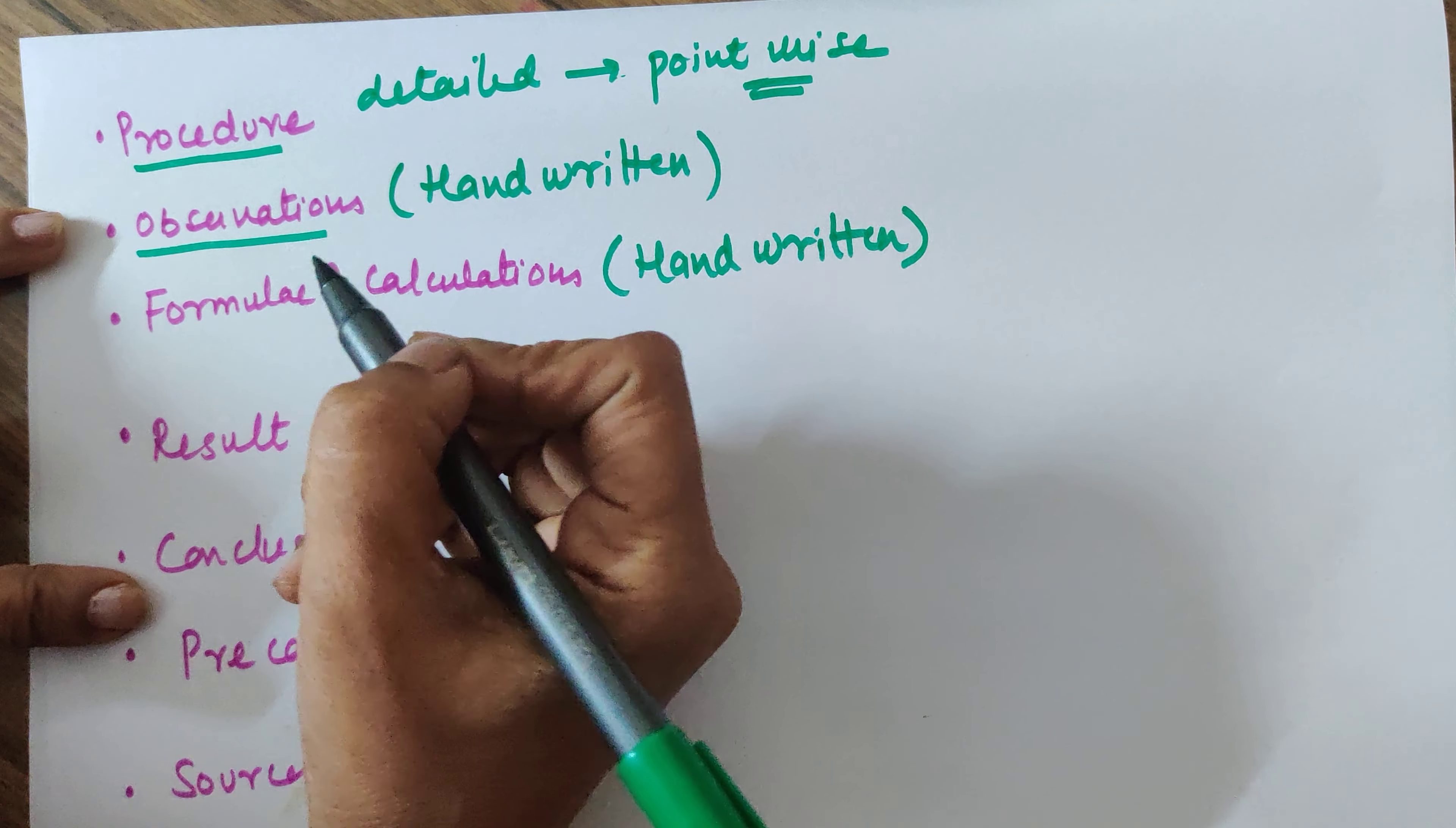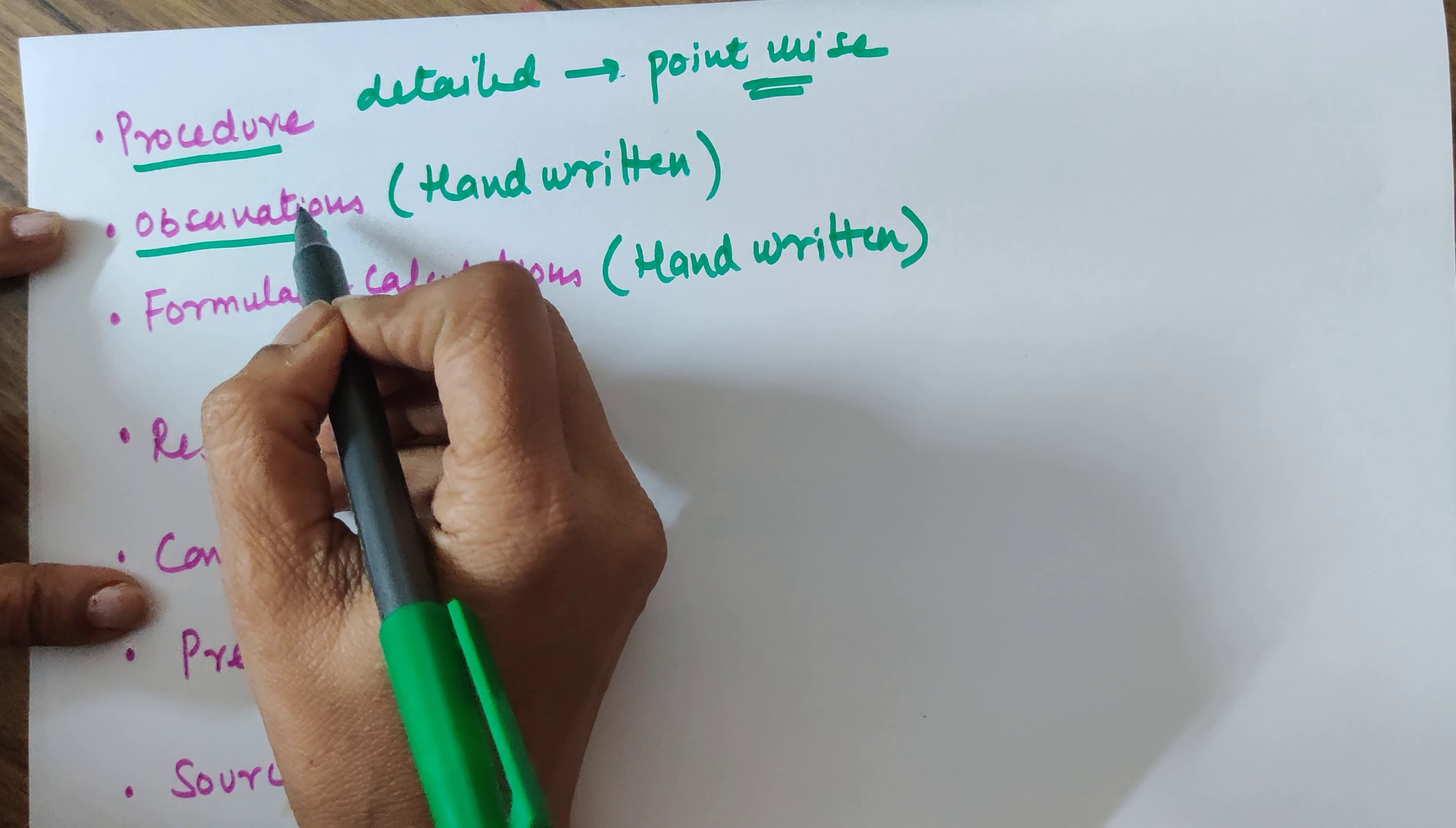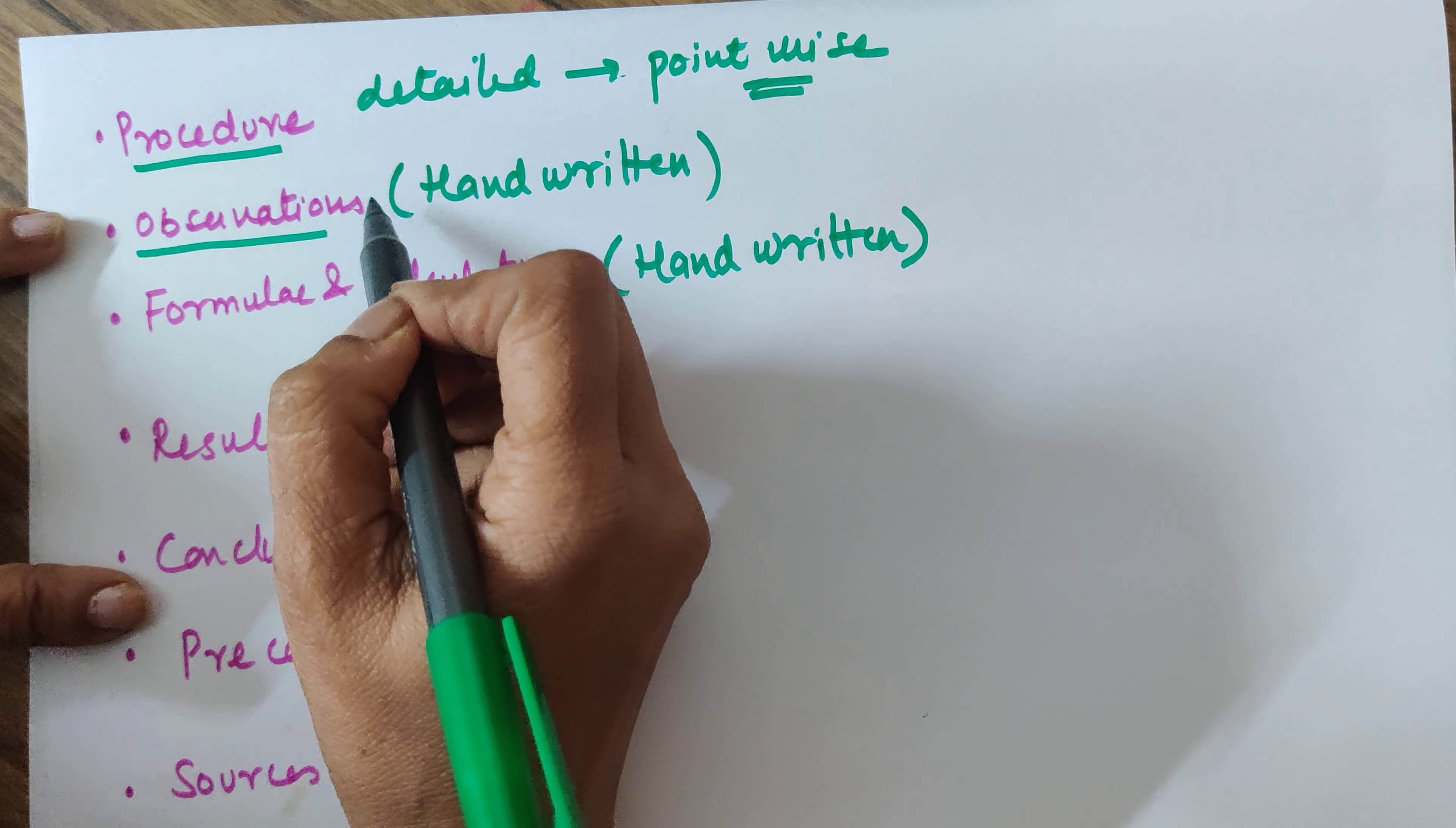Moving on to the next is observations. Now it is not necessary that your project has observations. Your project could also have graphs, it could have a sample that you are preparing. Like let's say you are preparing a polymer, so there will be a graphical representation or you might have a sample that you have prepared, like a rayon sample for example. So there will be a sample stuck on that page.